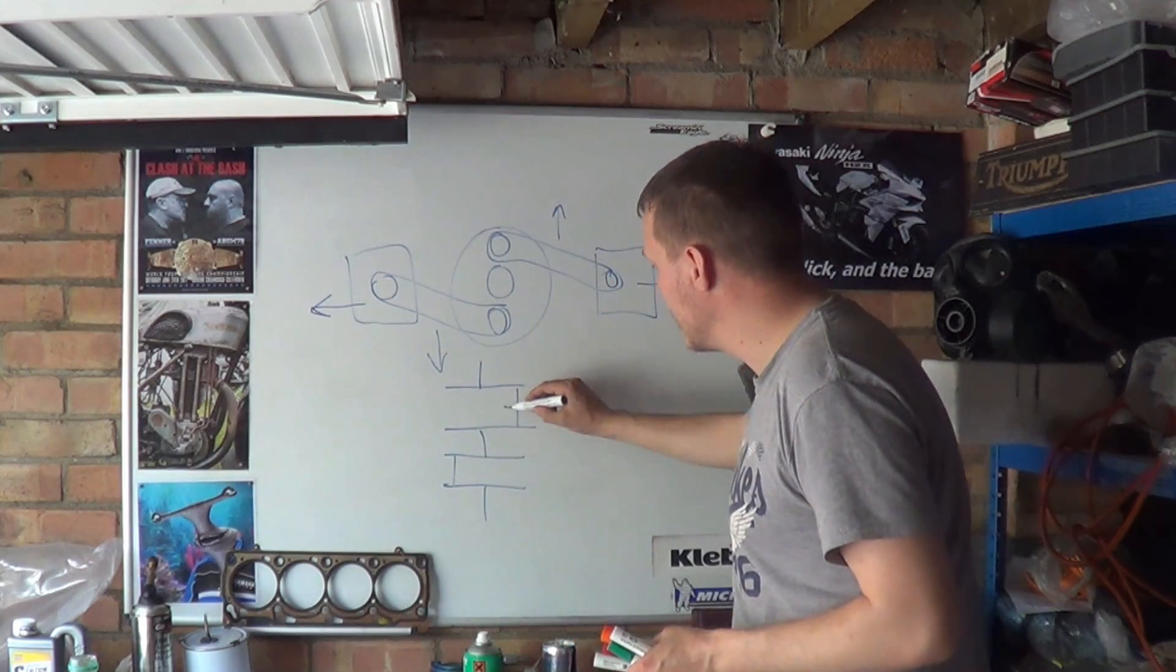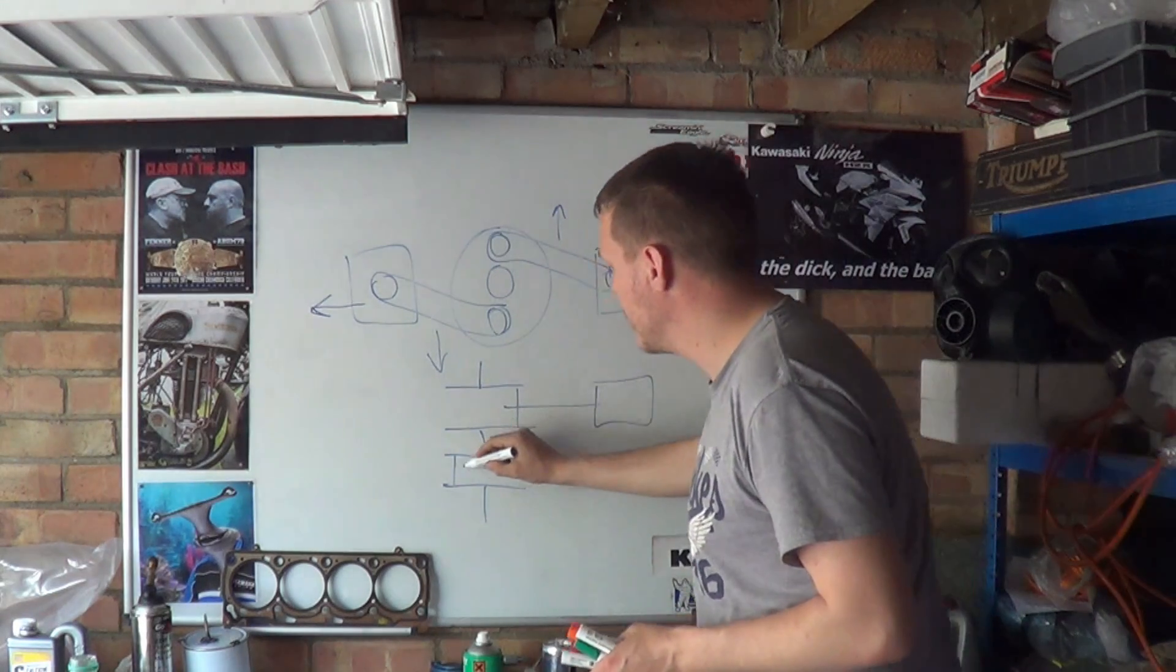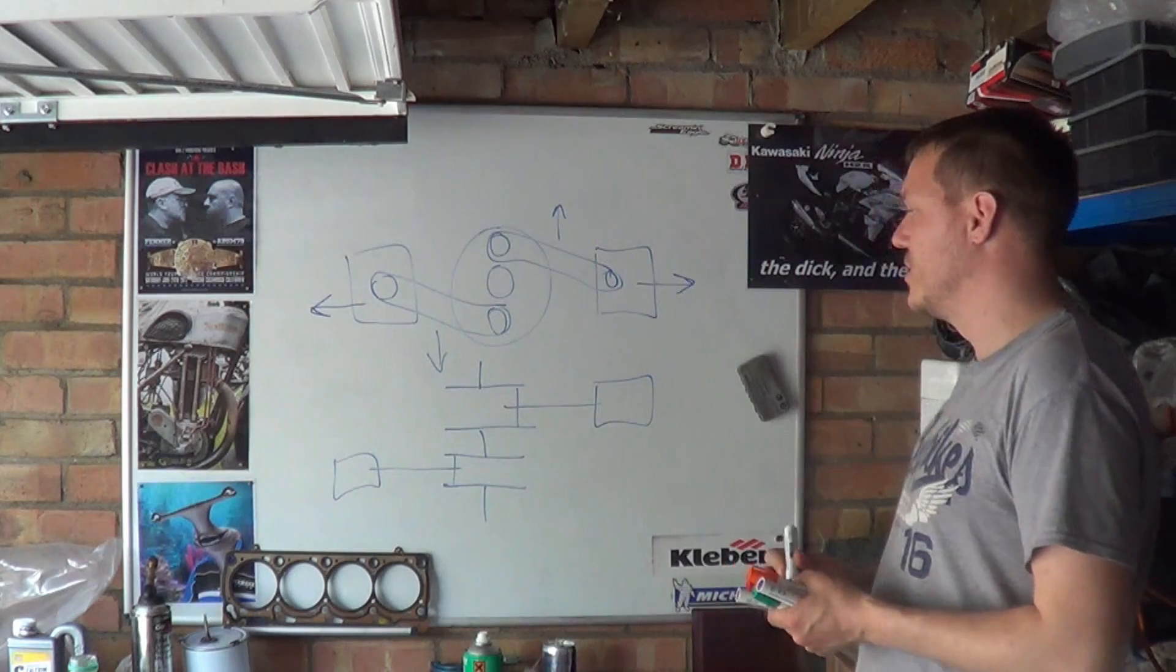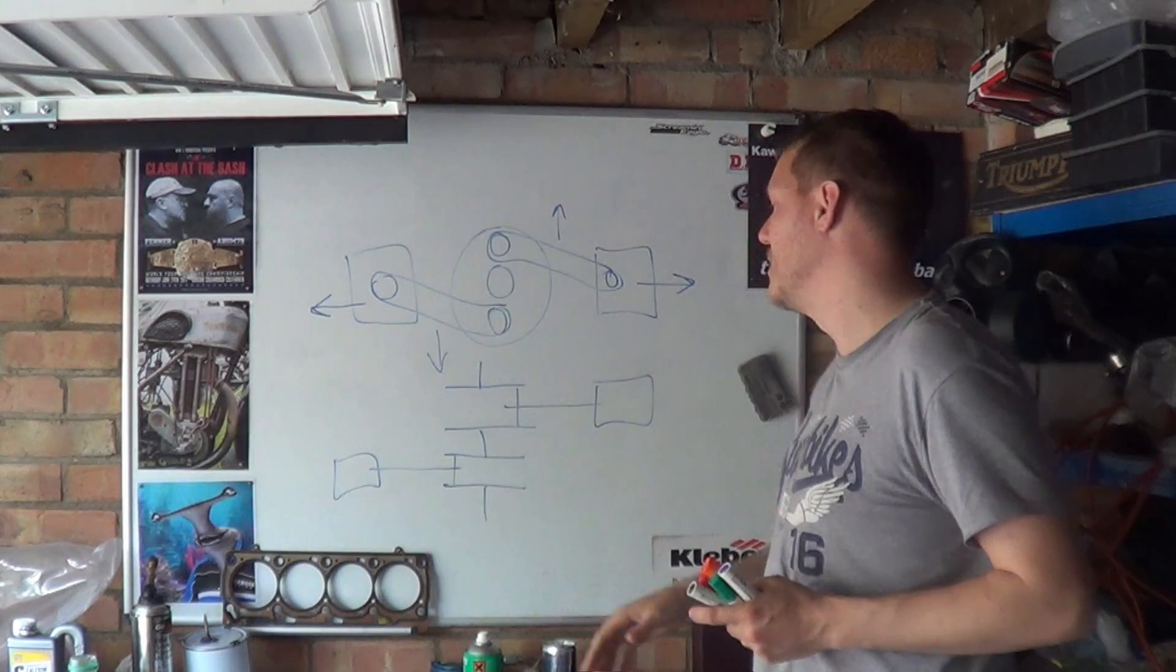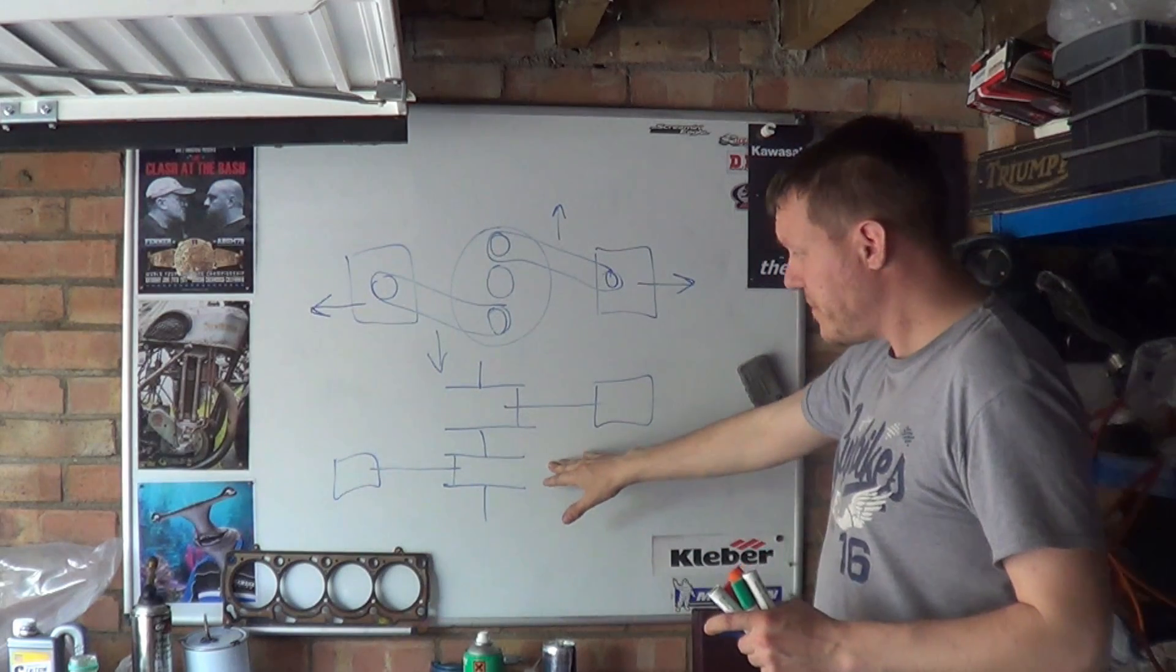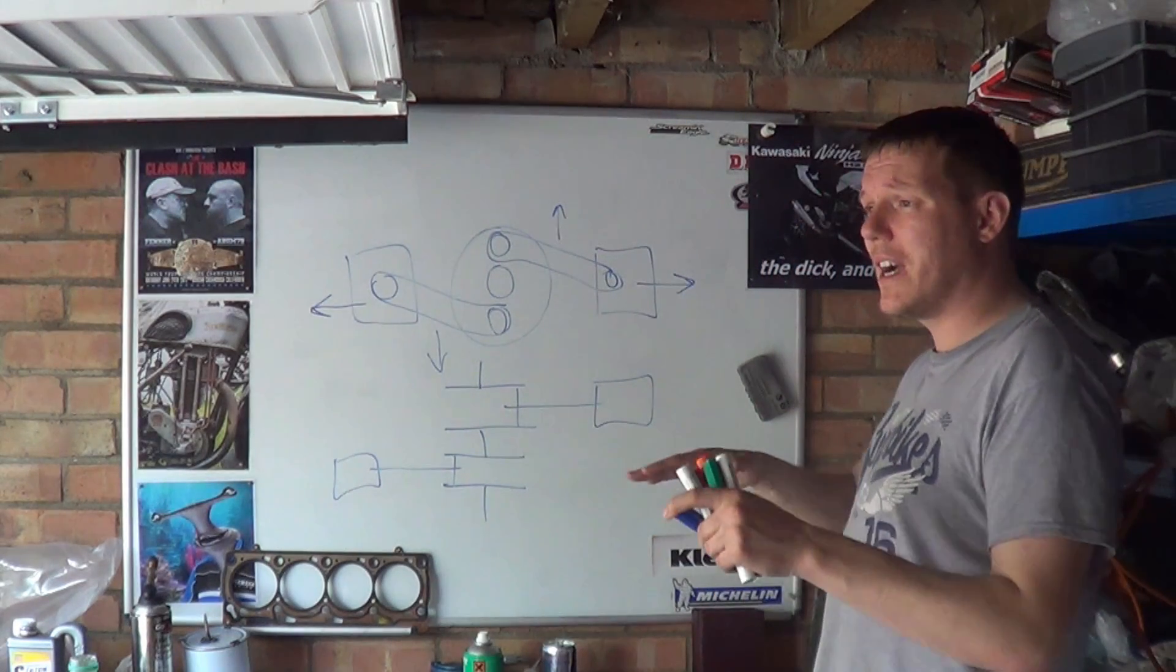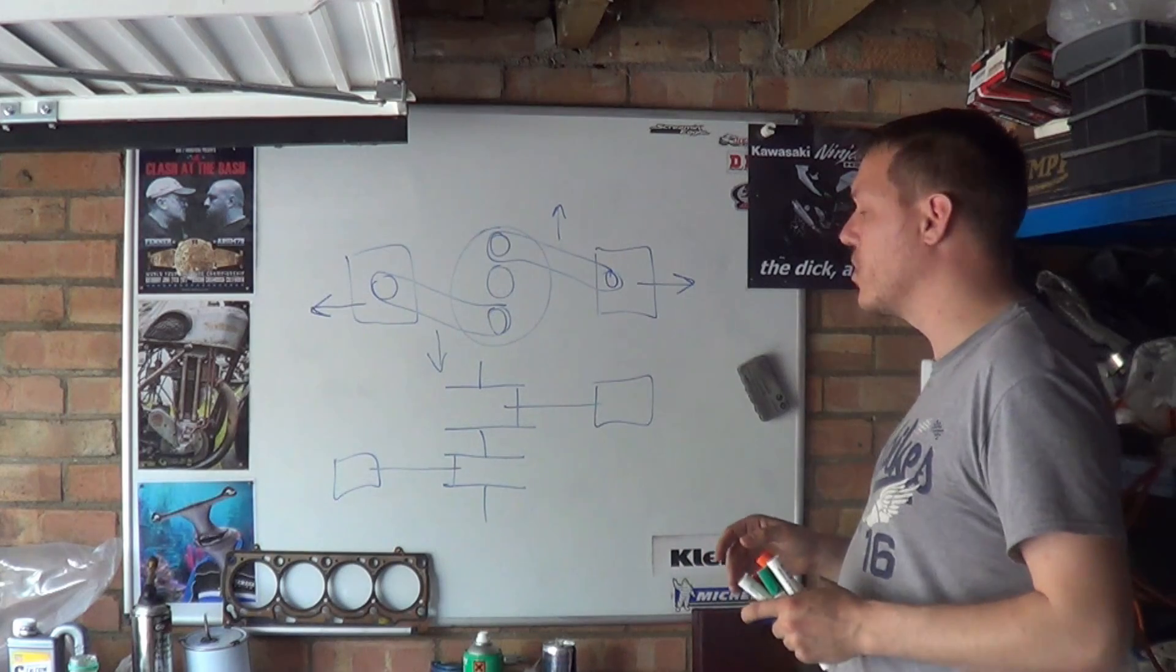But the conrods are actually like this. And when you actually look at this engine, you will see all of a sudden that it's not balanced looking from above, from a top view, from a plan view. It's not balanced in this way and you do kind of get a slight flexing rocking couple effect.